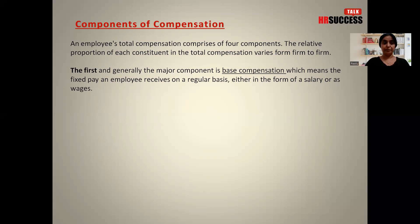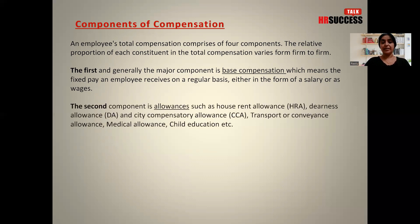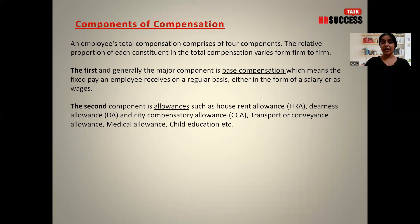The second component is allowances, such as HRA (House Rent Allowance), Dearness Allowance, City Compensatory Allowance, transport or conveyance allowance, medical allowance, and child education allowance. This is also a cash transaction, but it gives you an opportunity to save tax. You are given a certain amount under each category, and if you are able to provide the bills or receipts, you can save tax on that amount; the balance remains taxable.